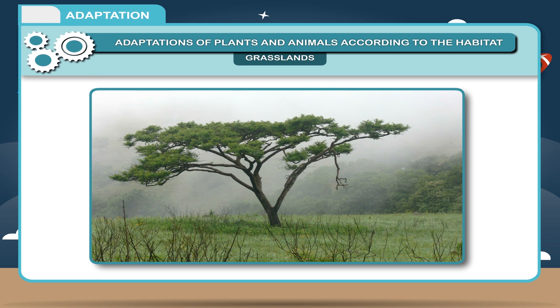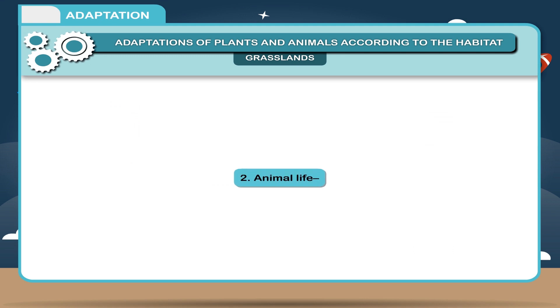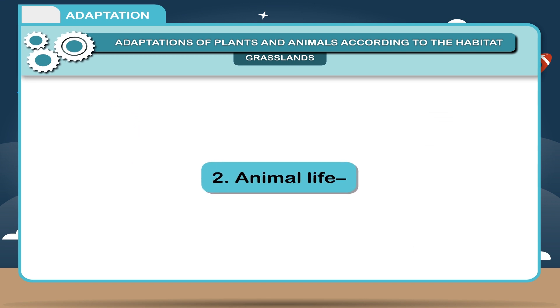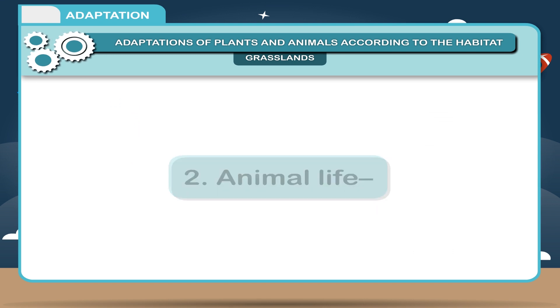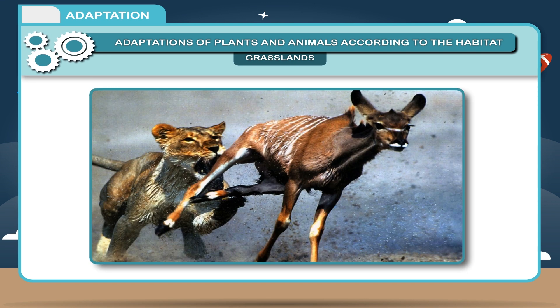Acacia trees have small leaves and roots that go deep into the soil in search of water. 2. Animal life: Lions live in forests and grasslands.